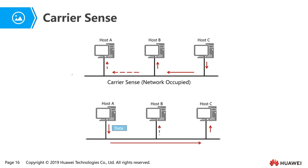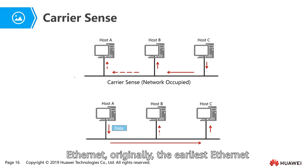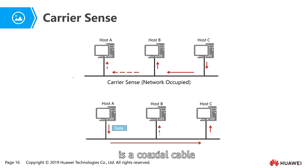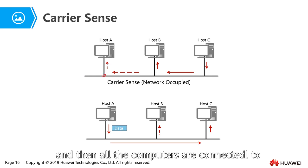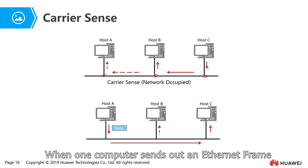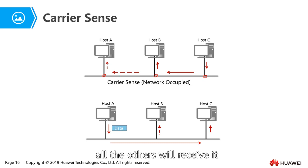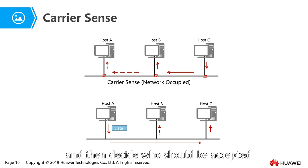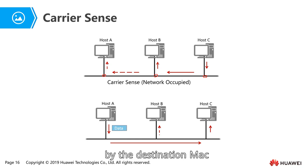Originally, Ethernet used coaxial cable, and all the computers were connected to this coaxial cable. That means when one computer sends out an Ethernet frame, all the others will receive it. All the others receive it, then decide who should accept it by checking the destination MAC address.